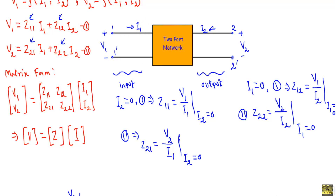I2 will equal zero when the output port is open, and I1 will equal zero when the input port is open. In that case, we can calculate Z11 by taking the ratio of V1 and I1, Z21 by taking the ratio of V2 and I1, Z12 by taking the ratio of V1 and I2, and Z22 by taking the ratio of V2 and I2. These are the impedance parameters of the two-port network.